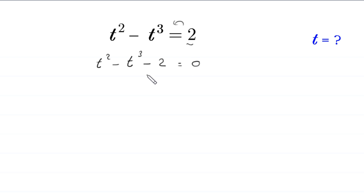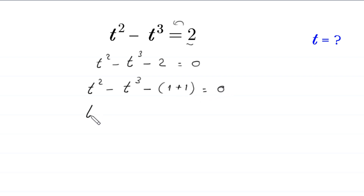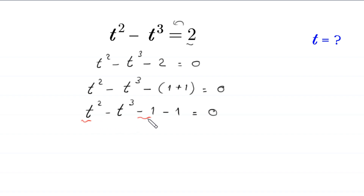We rewrite: t squared minus t cubed minus 2, where this 2 is the same as 1 plus 1, equal to 0. So negative times 1 gives negative 1, and negative times 1 gives another negative 1. Now we rearrange these terms — we write t squared with negative 1, and negative t cubed with negative 1 — giving us: t squared minus 1 minus t cubed minus 1 equals 0.